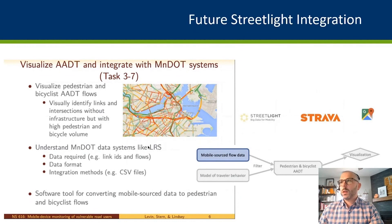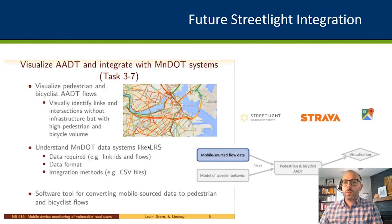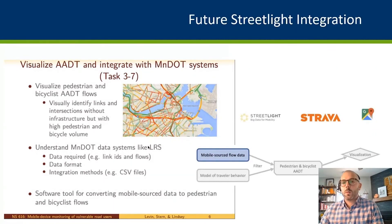Looking at the future of pedestrian and bicycle planning at MnDOT and opportunities for Streetlight in our processes, we have another group — a partnership between MnDOT and the University of Minnesota — looking at mobile-based applications including Streetlight and other big data sources such as Strava to get mobile-sourced flow data. The goal is to improve and eventually create a pedestrian and bicyclist AADT map for the full state of Minnesota. This will be an interactive online tool where you can click on any road within the state and see the estimated volume for pedestrians and bicyclists. We're really looking forward to that project.